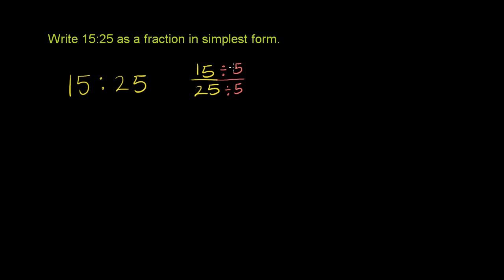So now we get 15 divided by 5 is equal to 3, and 25 divided by 5 is equal to 5.